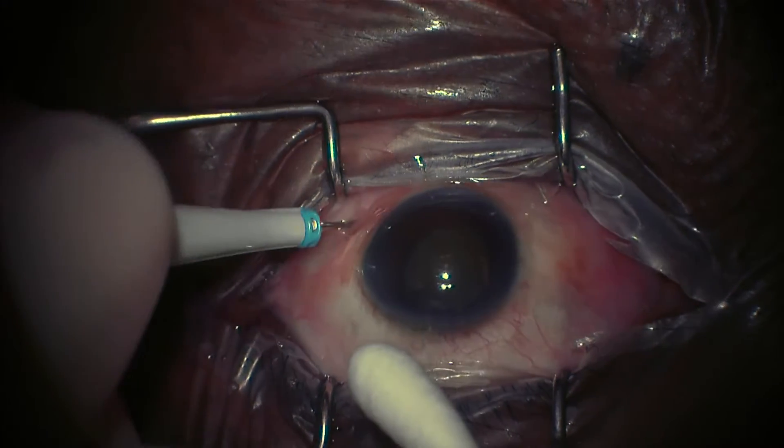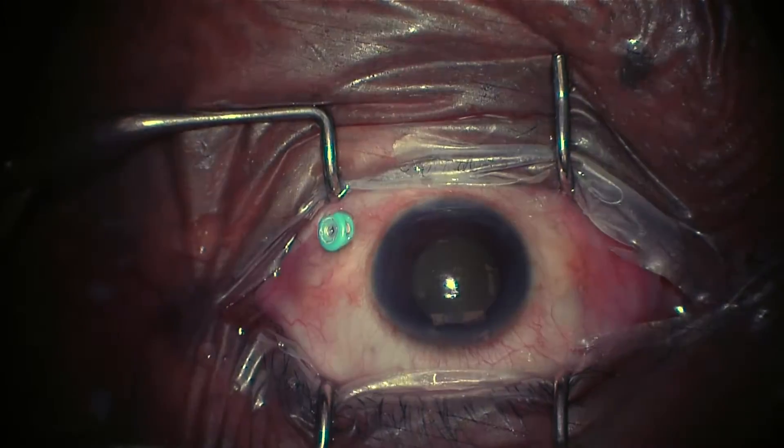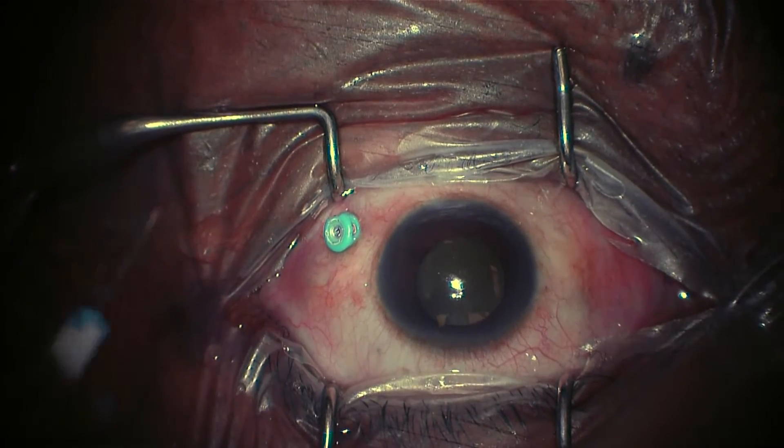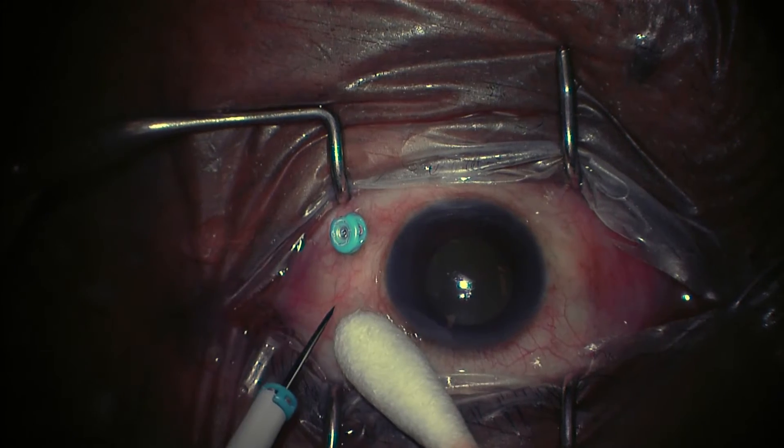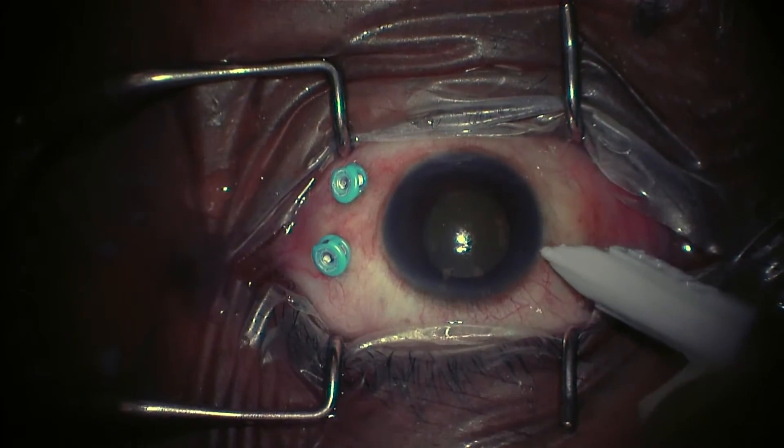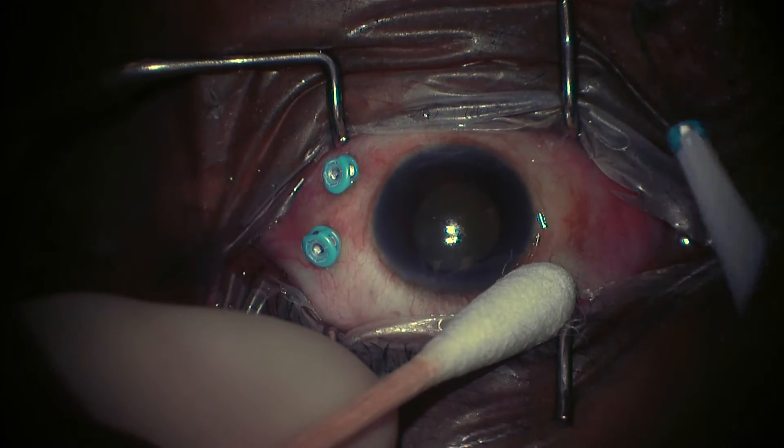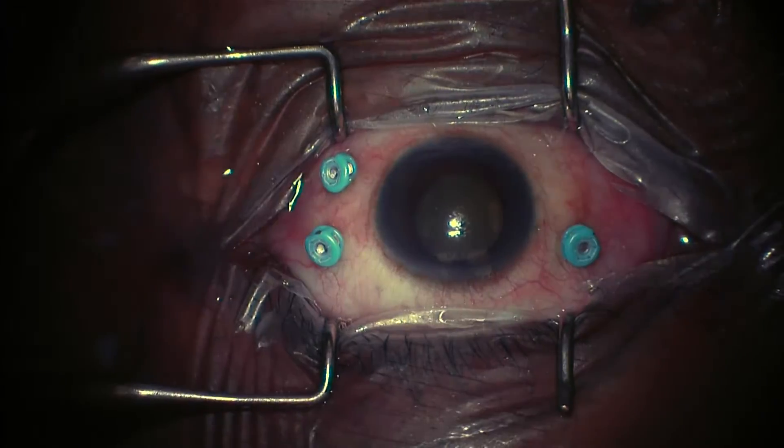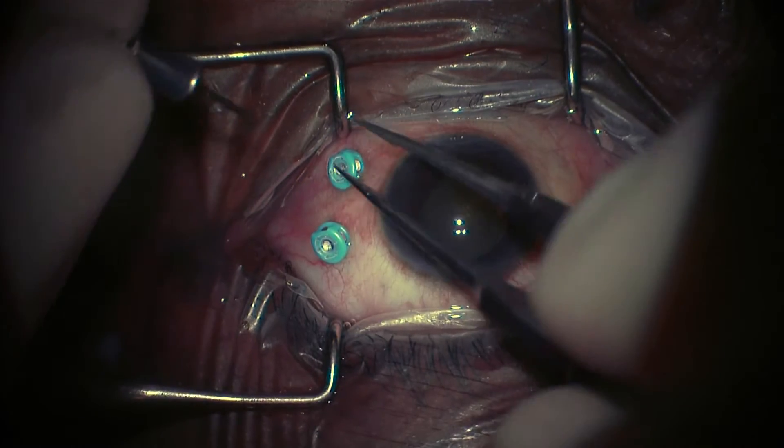We're going to start by putting in our ports for standard three-port pars plana vitrectomy. We're sitting superiorly, and this patient has surgery for the left eye, and we're going to put an inferior temporal port and then two ports superiorly, superior temporally as well as superior nasally. They're four millimeters posterior to the limbus because this patient is phakic.